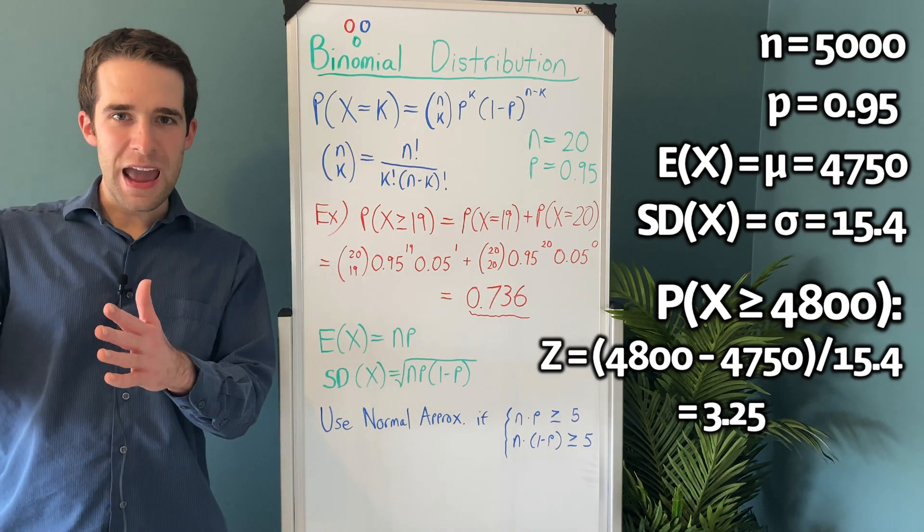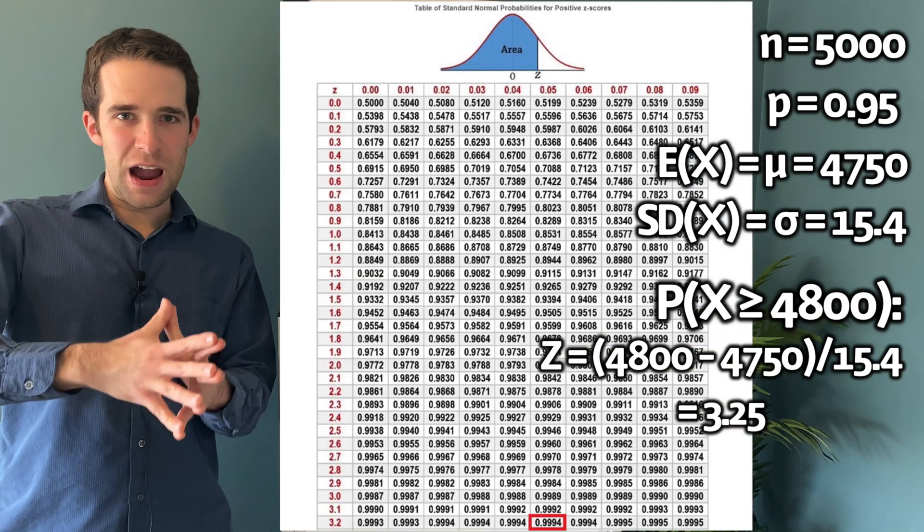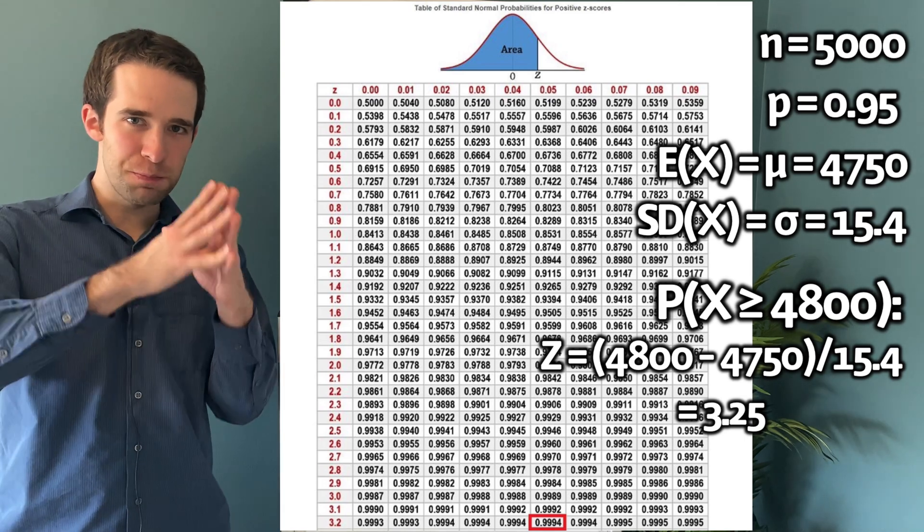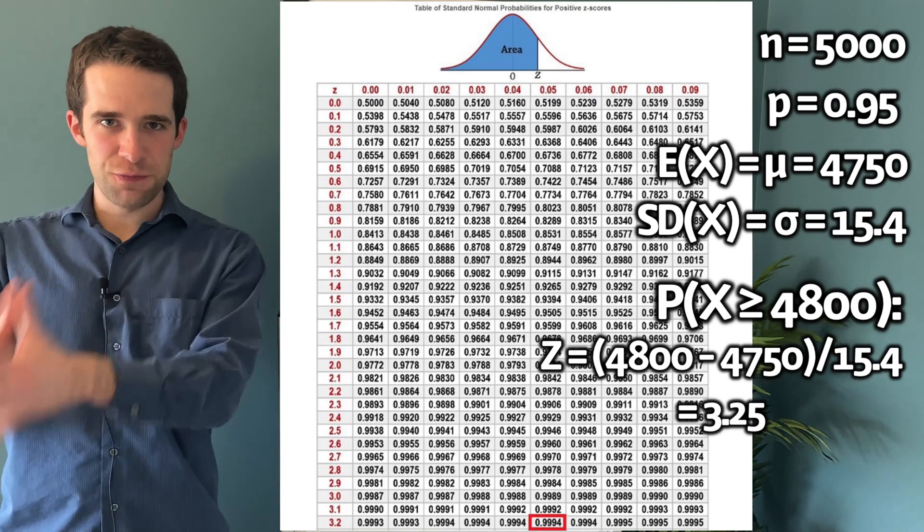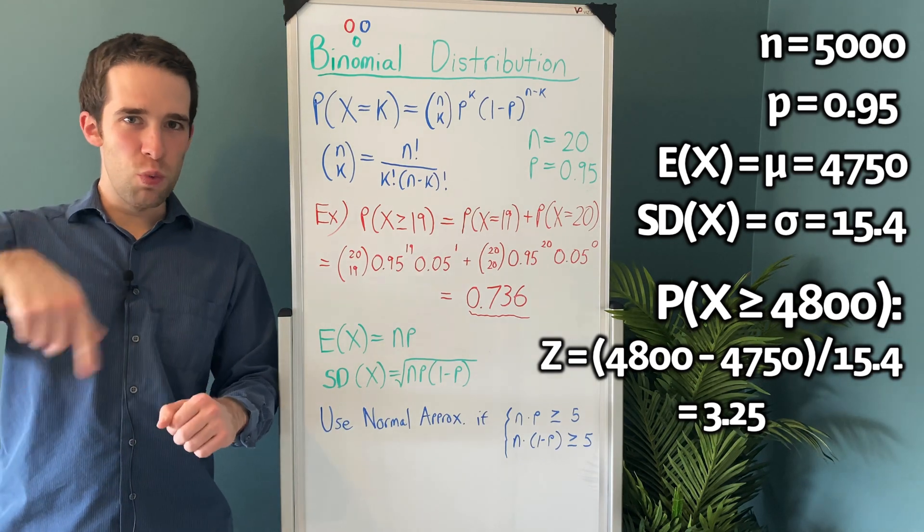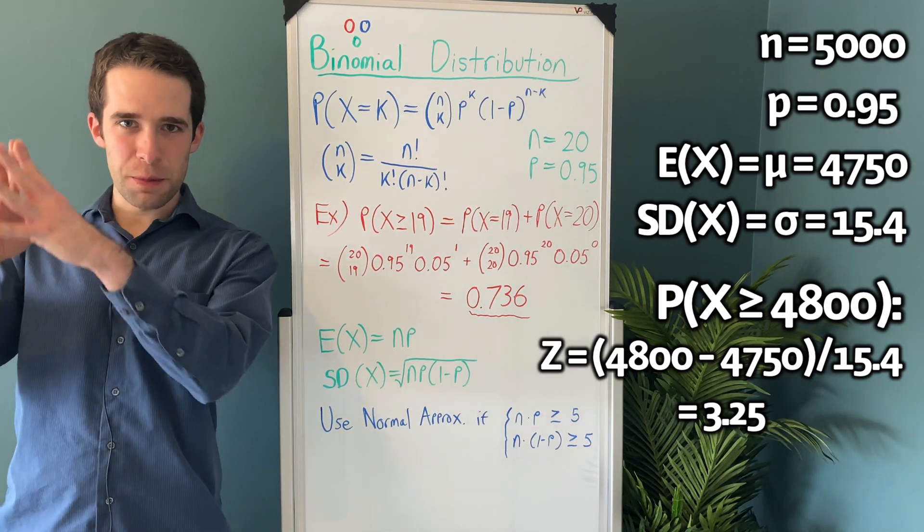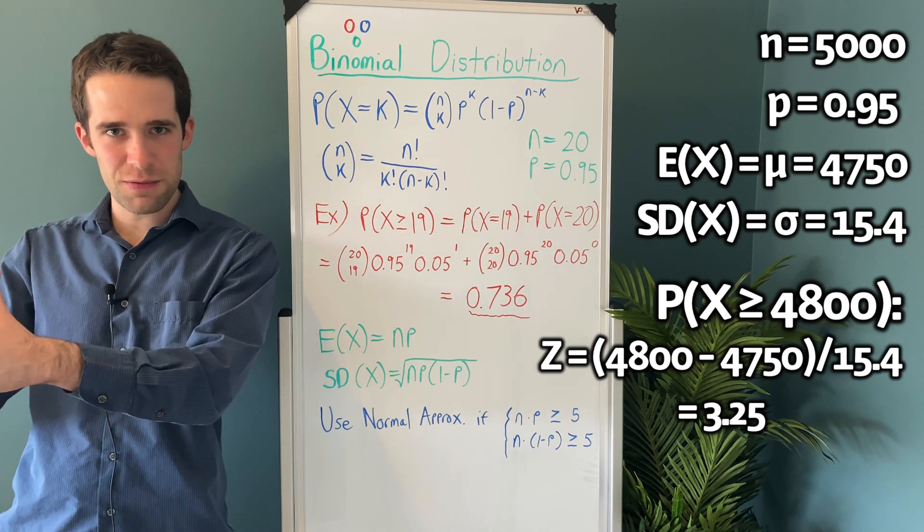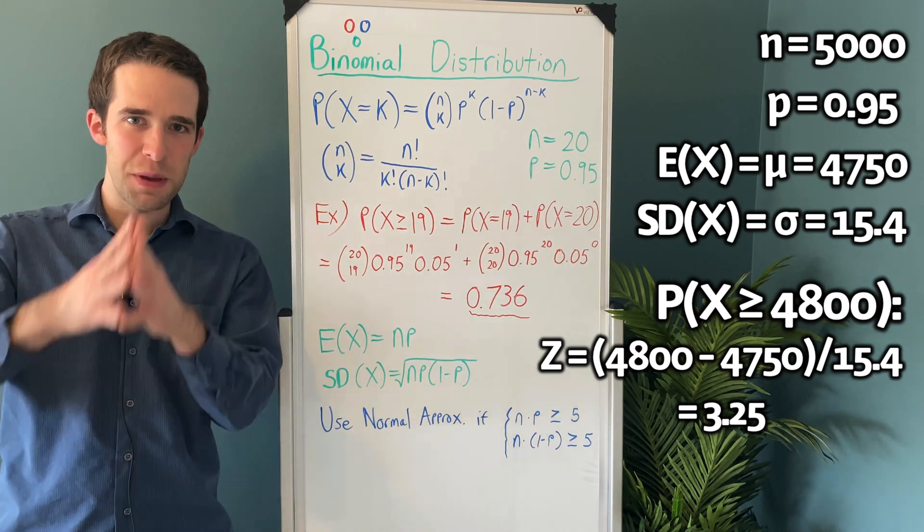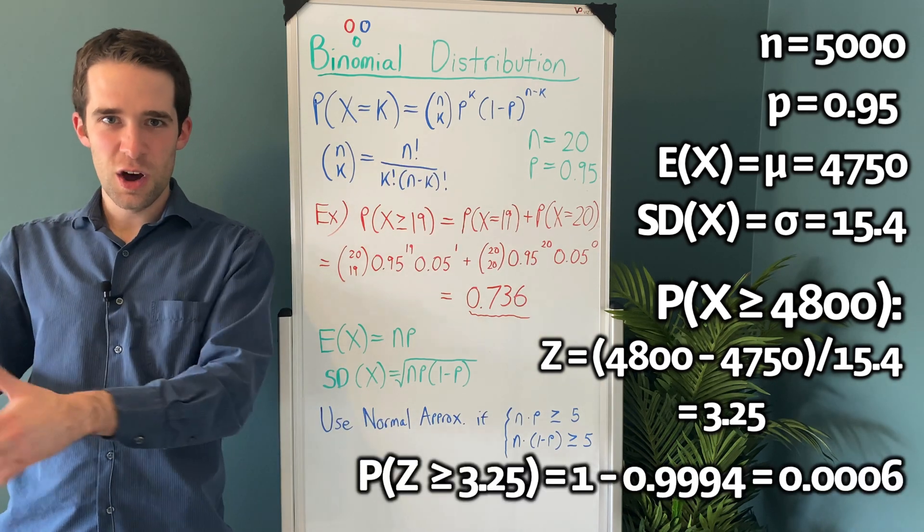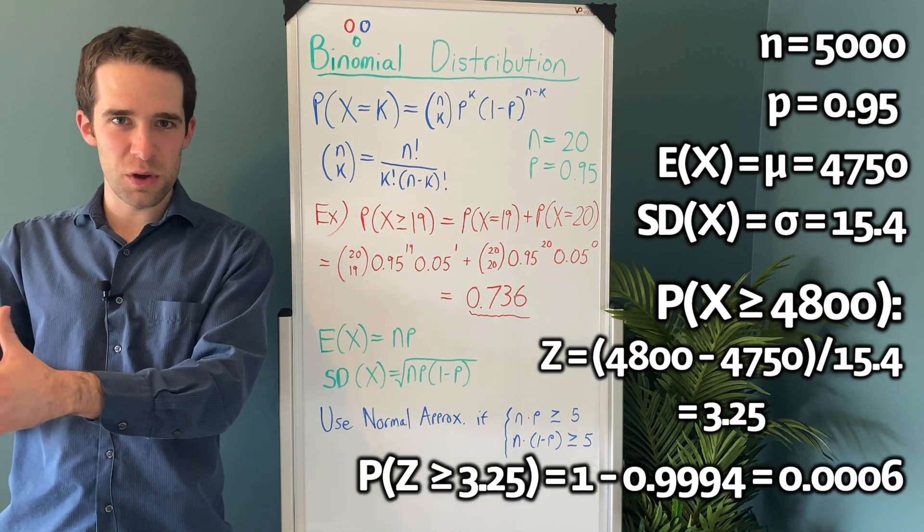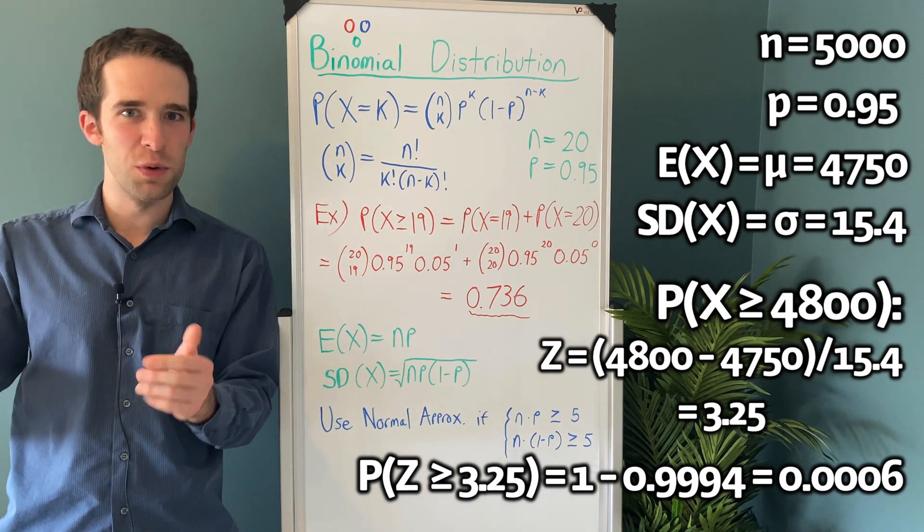We go to our handy normal probability table. We look up the area to the left of z equals 3.25. We see that it's 0.9994. So we have to do 1 minus that because we're looking at the probability that z is greater than or equal to 3.25. So we find that probability to be 0.0006. All that to say, there's 0.0006 probability that 4800 or more people would survive.